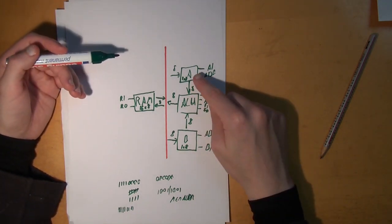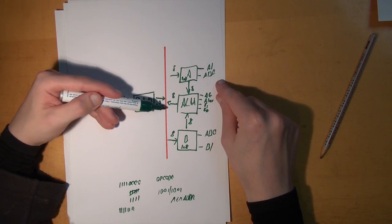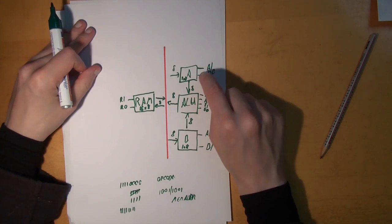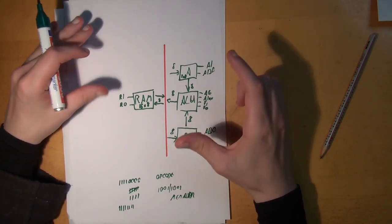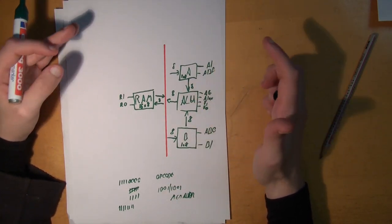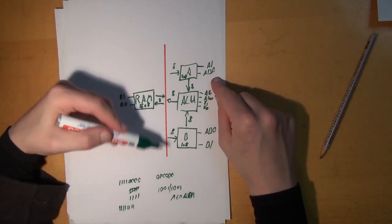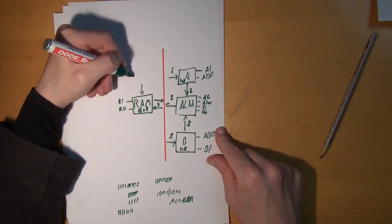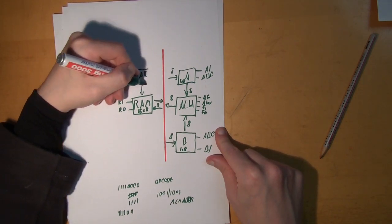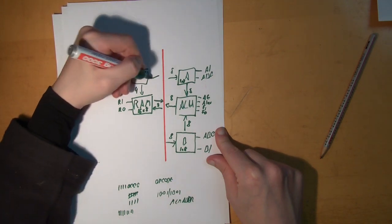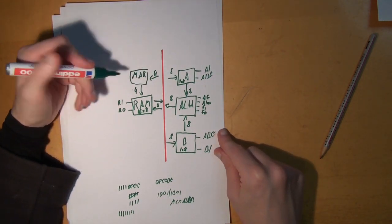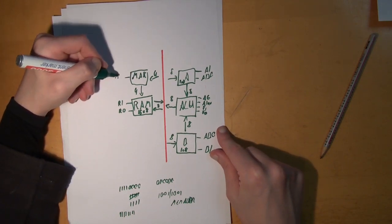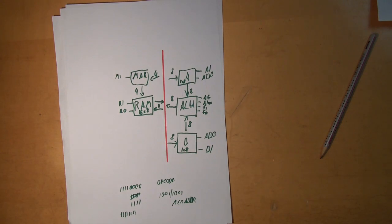It's the same problem we already have here: we cannot output information from the ALU and input information to the ALU from the bus at the same time — which is the reason why we have A and B. They basically buffer a number so that the bus is free for the ALU to write. The same is true for the RAM. The RAM has a register called the Memory Address Register (MAR), which outputs a 4-bit memory address to the RAM.